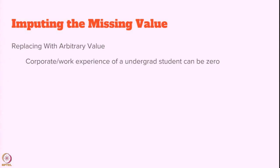Imputing means filling a missing value with some value using various methods. Not all methods are correct for a given dataset or problem. One way is replacing with an arbitrary value — for example, corporate work experience for an undergraduate student can be set to 0, since it is rare they have experience. Similarly, the number of married students in a high school can be arbitrarily set to 0.